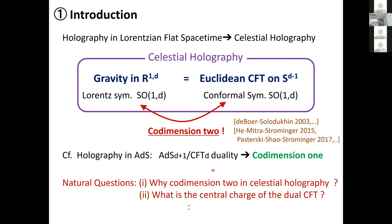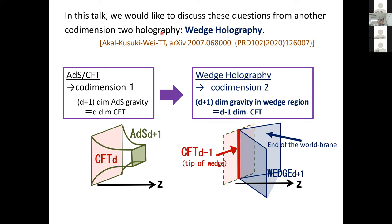For those working on holography for a long time, AdS/CFT gives a co-dimension-one duality relation, whereas celestial holography provides a co-dimension-two duality. The natural question I'd like to ask is: why does co-dimension two appear in celestial holography? Another question: if we have some Euclidean CFT, how can the central charge — a basic quantity — be computed or estimated from gravity? I would like to give some idea in this direction using wedge holography, a co-dimension-two holography in the context of AdS/CFT.